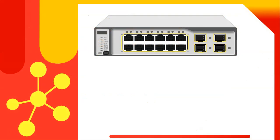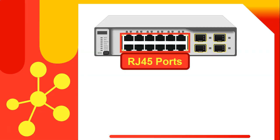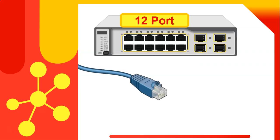Here we have an example of a switch, and there you can see a whole bunch of ports — those are called the RJ45 ports. There are about 12 of them, so this would be a 12-port switch. There's a cable called RJ45, very similar to your network cable, and that cable will be plugged into one of those ports. Because there are only 12 ports, that means we can only connect 12 computers or devices.